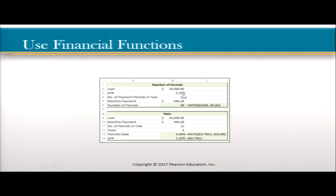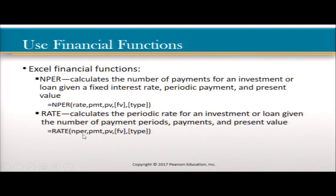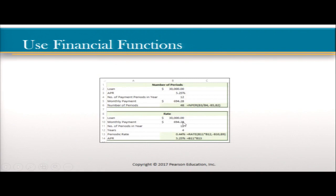The periodic rate is basically taking your interest rate and dividing it by 12 — each period is one month, so you pay a percentage of that rate per month. In this case, 0.44% per month on a 5.25% loan. They took B11 (number of payment periods, 12) multiplied by B12 (4), then minus B10 for the monthly payment, and B9 for the present value of $30,000, to get the periodic rate of 0.44.